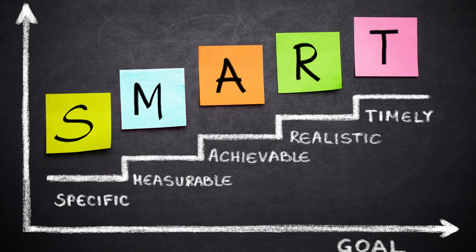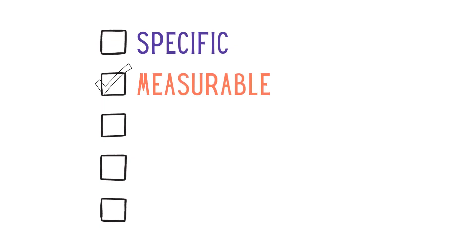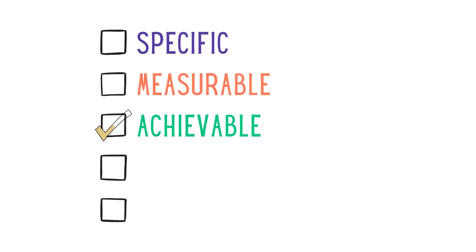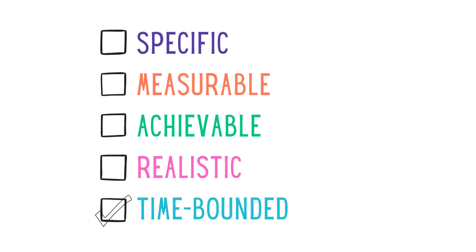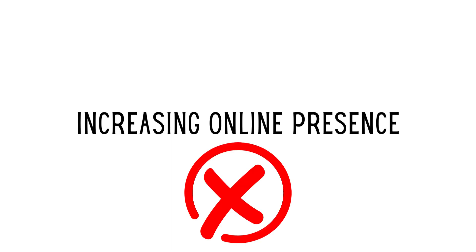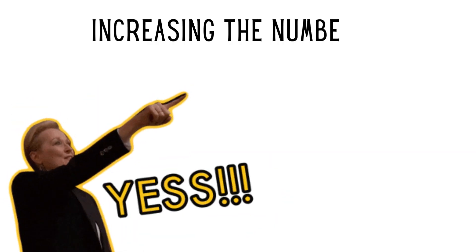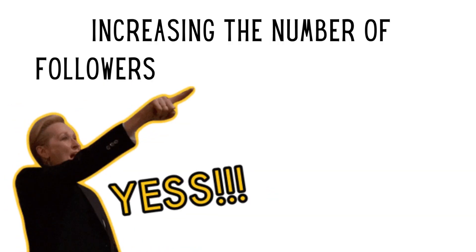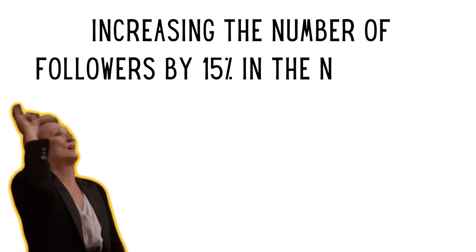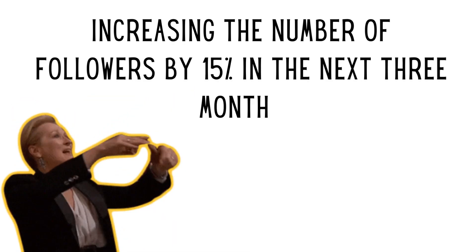Your goals should be SMART — that means specific, measurable, achievable, realistic, and time-bounded. For example, just stating 'increasing online presence' is not enough. Instead, it should be something like increasing the number of followers by 15% in the next three months.